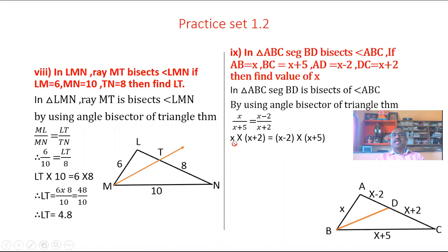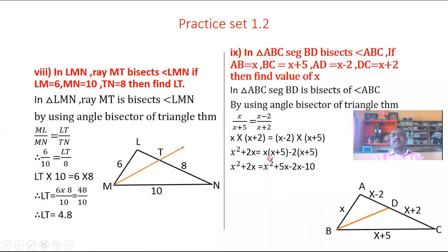Expanding: X into X gives X squared, plus X multiplied by 2 gives 2X. On the right side: X plus 5 multiplied by X minus 2. Expanding: X into X gives X squared, plus X into 5 gives 5X, minus 2 multiplied by X gives minus 2X, minus 2 multiplied by 5 gives minus 10. So LHS is X squared plus 2X and RHS is X squared plus 5X minus 2X minus 10.